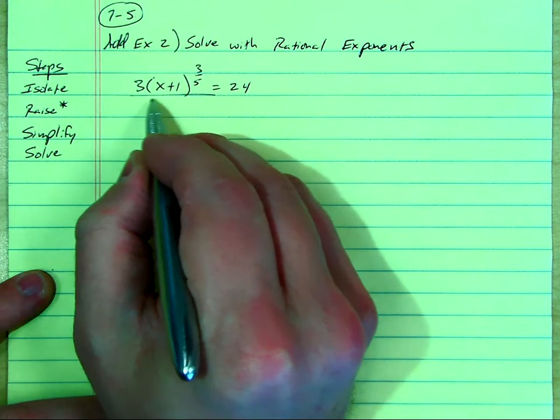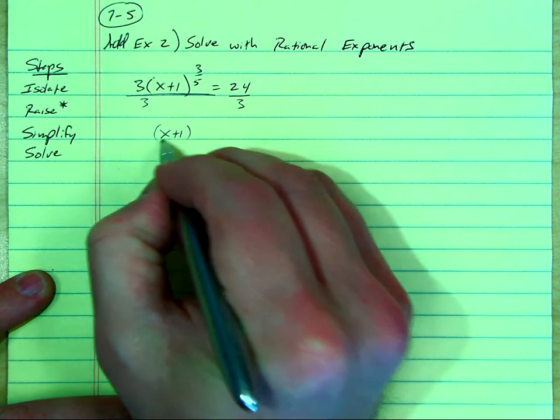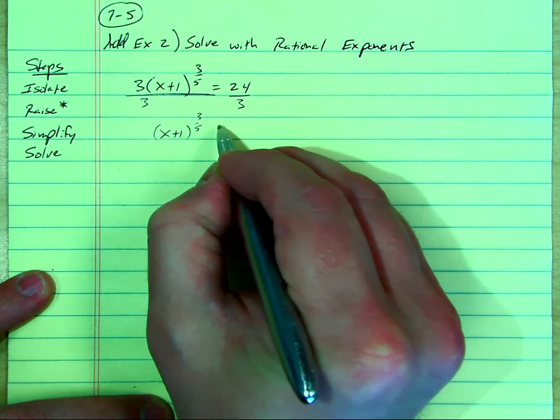So first, let's isolate the expression, divide both sides by 3. So we get (x+1) to the 3/5 power equals 8 over 3.